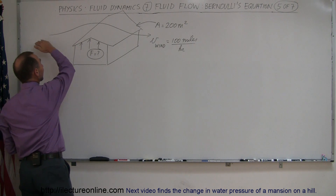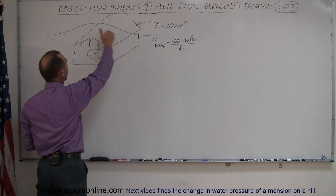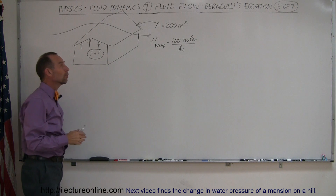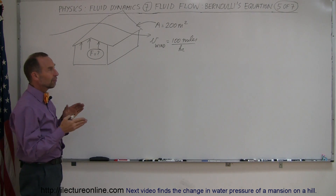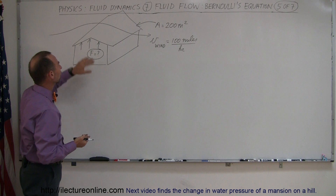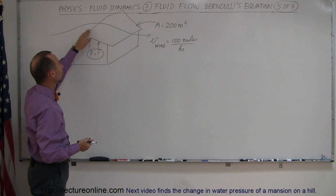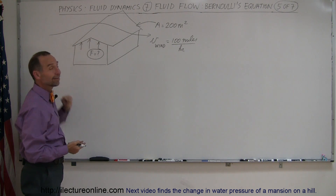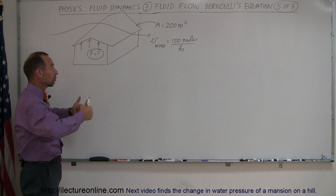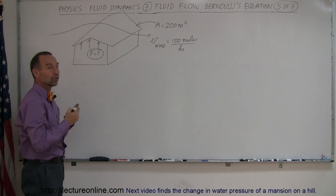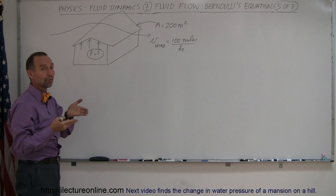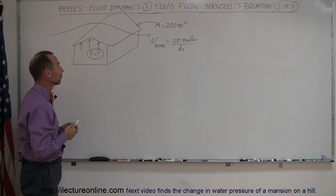Remember that any fluid flow — in this case air flowing over the roof very quickly, moving at 100 miles per hour — if the velocity increases, the pressure decreases, which causes less pressure to exist above the roof than inside the house. That would cause a force, a pressure pushing the roof up. We're going to calculate the force that will be acting on the roof, trying to push the roof off the house.